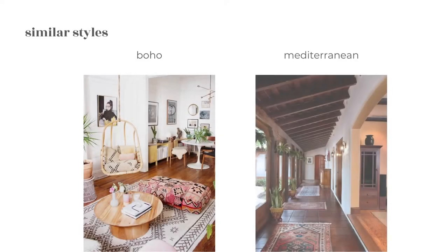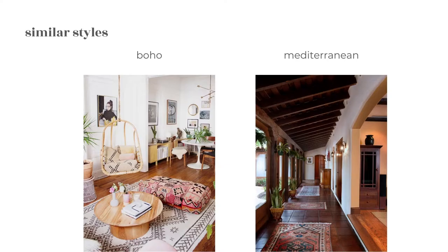For similar design styles, the first one I'd suggest is boho interiors — there's a playfulness these styles share, a well-traveled and collected feeling, and a lot of fun color. The second suggestion is Mediterranean style, which we covered last week. There's a lot of overlap: organic materials, textiles, terracotta, and drawing inspiration from nature and surroundings.